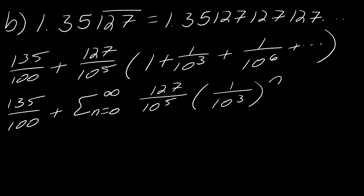So now this is again just geometric, so this is definitely a fraction less than 1. So I can rewrite this as 135 over 100, and then this will be 127 over 10 to the fifth, that's my constant, and then 1 minus 1 over 10 to the third.